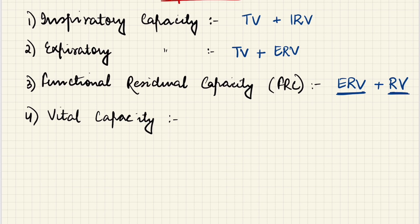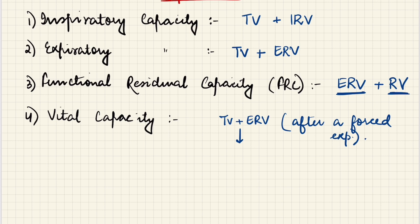The next capacity is vital capacity, which is very important and has been asked many times in the exam. After a forced expiration, the tidal volume and expiratory reserve volume go out. So after a forced expiration, how much air a person can breathe in: first the tidal volume, plus the inspiratory reserve volume, and also the expiratory reserve volume that was given out during the forced expiration must be refilled. So vital capacity equals tidal volume plus inspiratory reserve volume plus expiratory reserve volume.